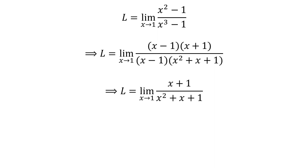Cancelling out the common factor x minus 1 in the numerator and denominator gives us L equals the limit of x plus 1 upon x squared plus x plus 1 as x approaches 1.